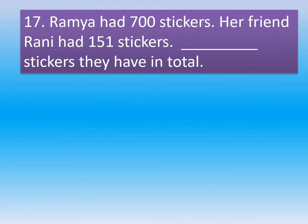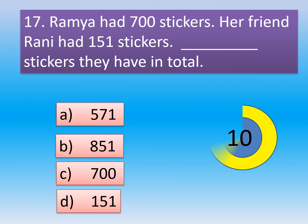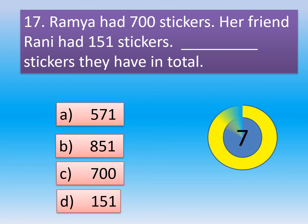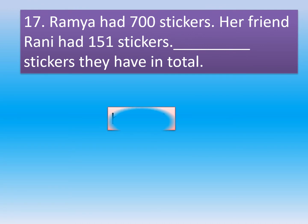Question number 17. Ramya had 700 stickers. Her friend Rani had 151 stickers. Dash stickers they have in total. Option A: 571. Option B: 851. Option C: 700. Option D: 151. The correct option is Option B: 851.